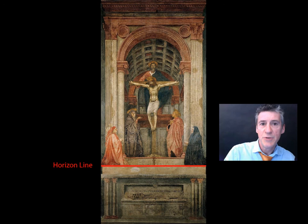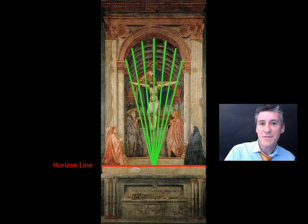To add to that effect, we use the lines of perspective from the vaulted ceiling. We trace them down and they give this sense of upward movement, as though Christ is physically moving in front of our eyes up to heaven.